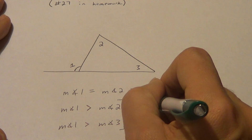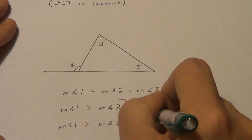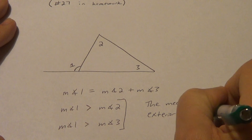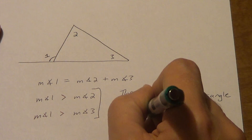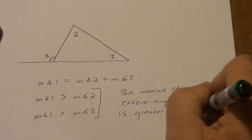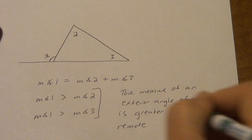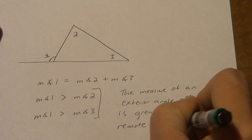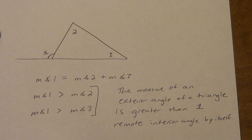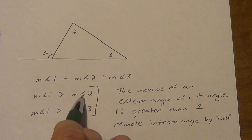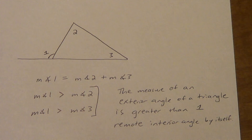The way you would word it is: the measure of an exterior angle of a triangle is greater than one remote — or non-adjacent, I usually use the word remote, meaning far away — one remote interior angle by itself. Remember, if I add the two remote interior angles together, then it equals the exterior angle. But if I'm only using one of them at a time, the exterior angle is going to be bigger — greater than one of them. That's all the theorem says.